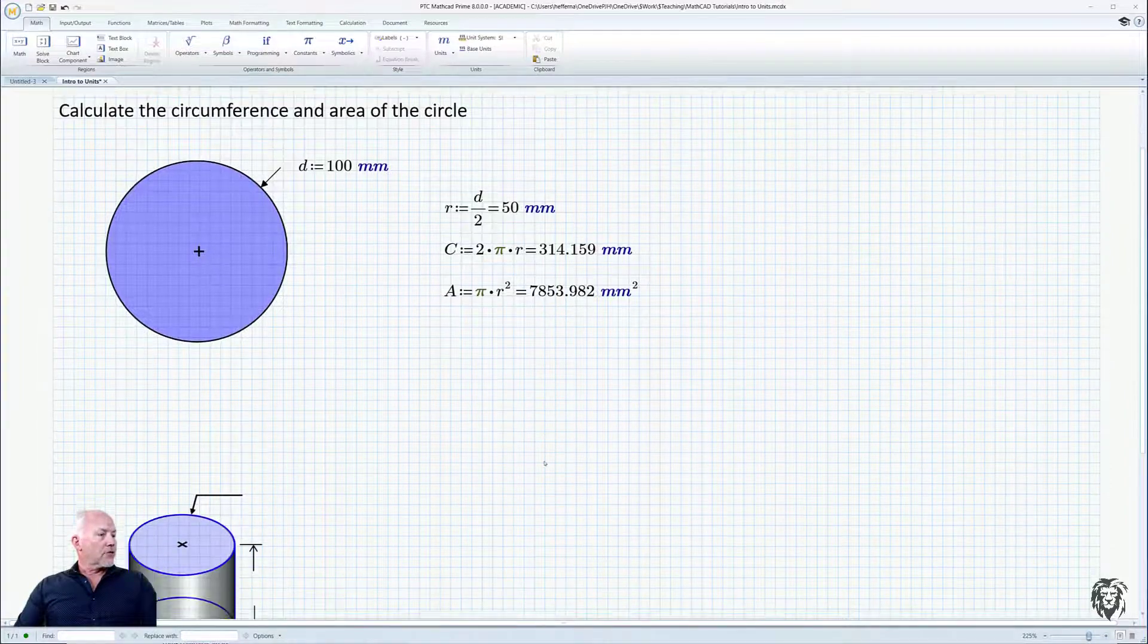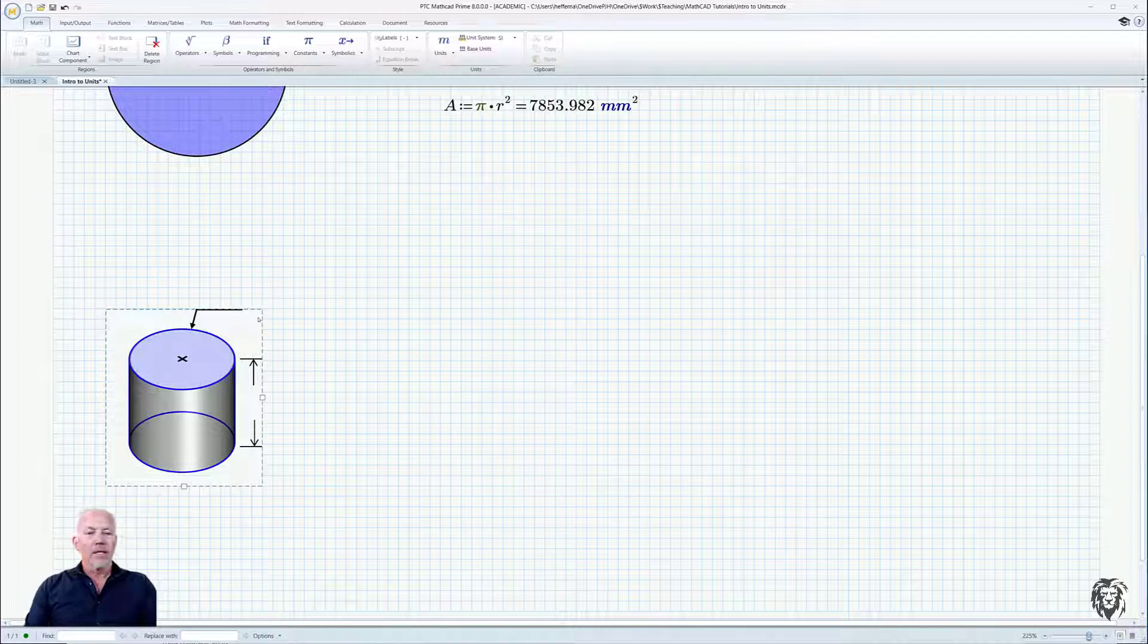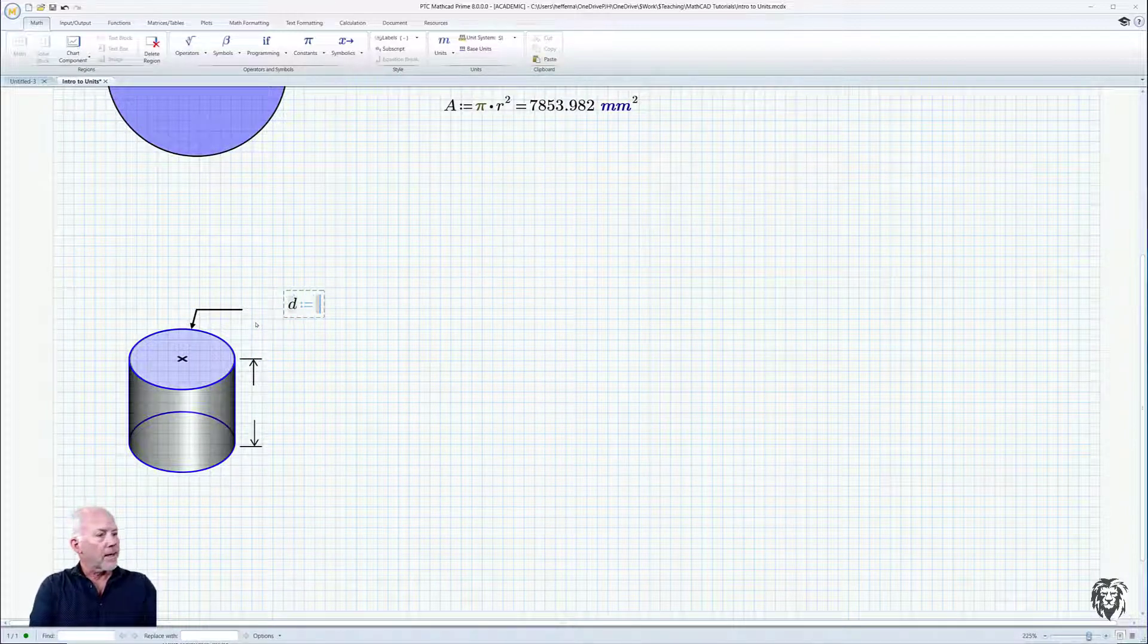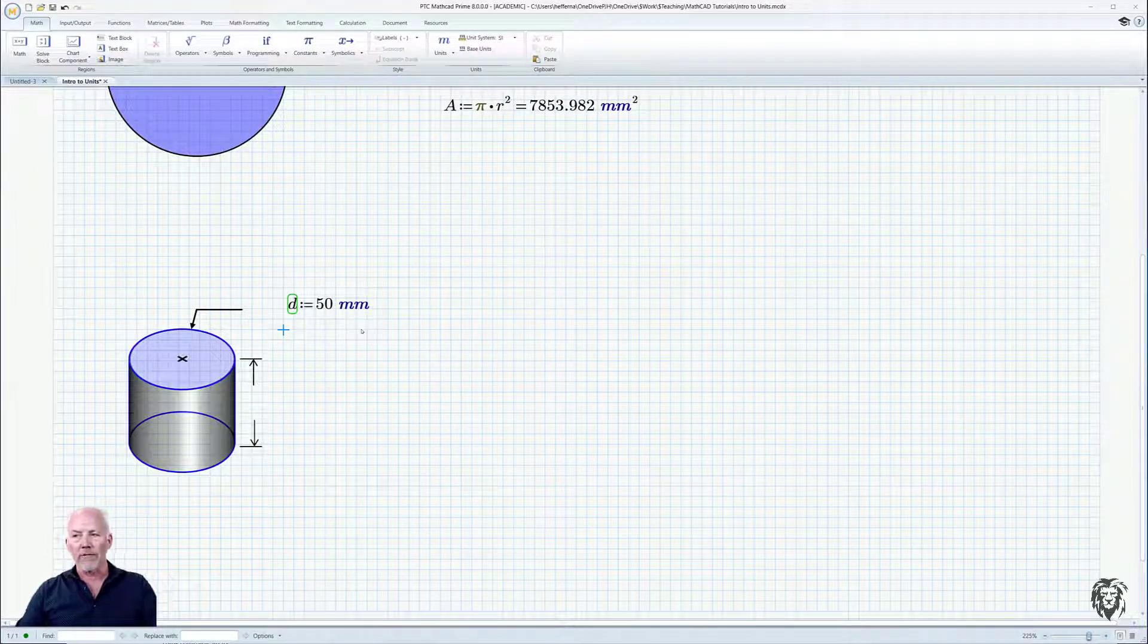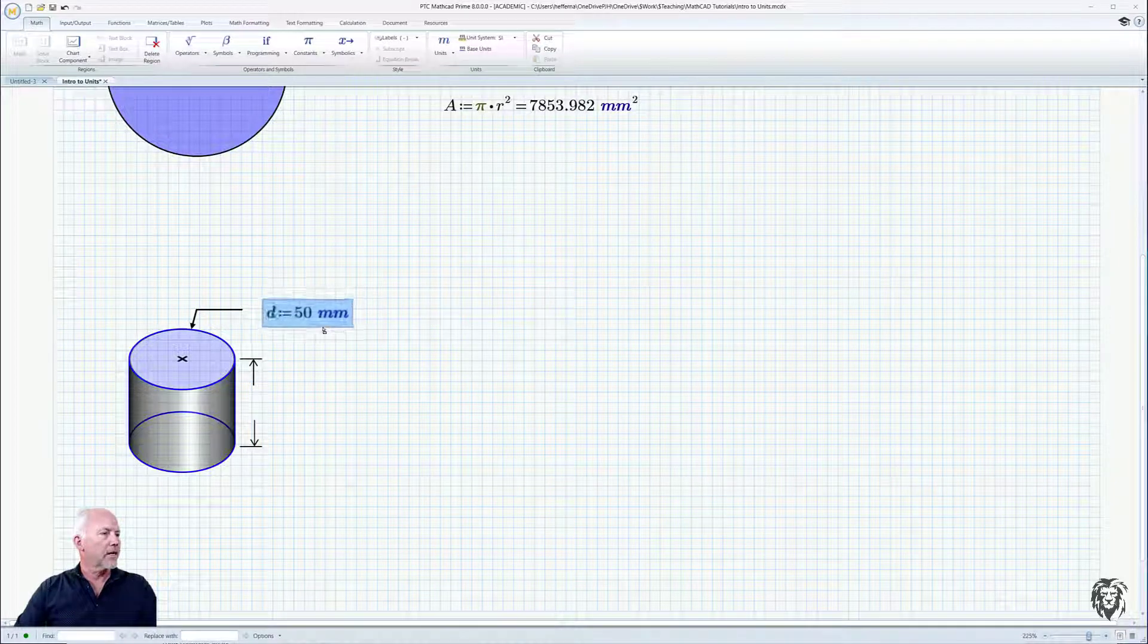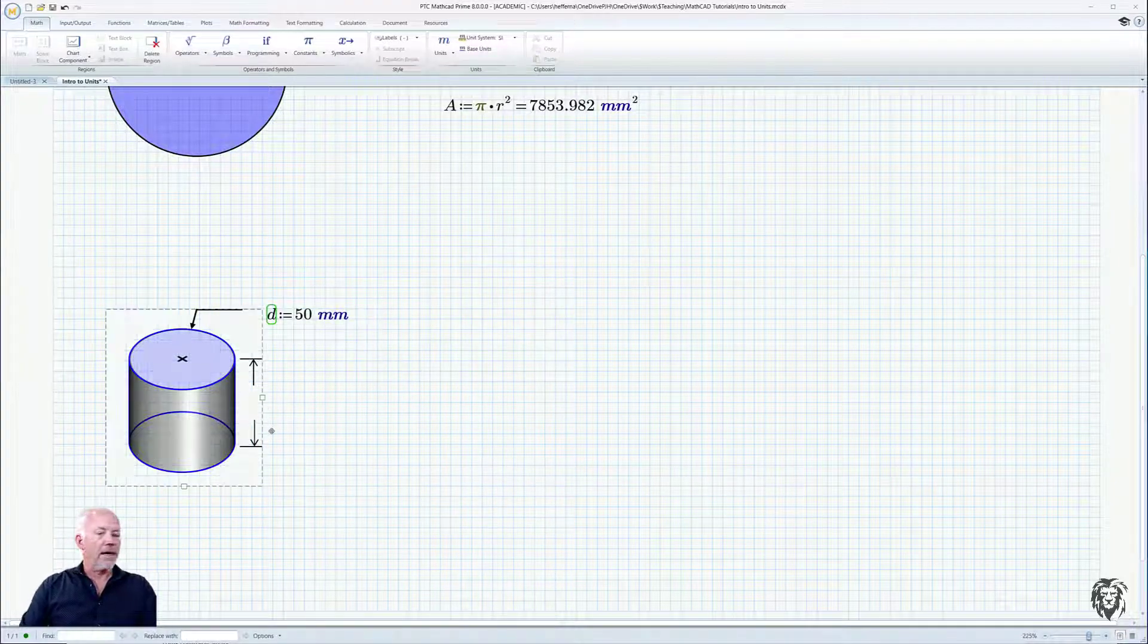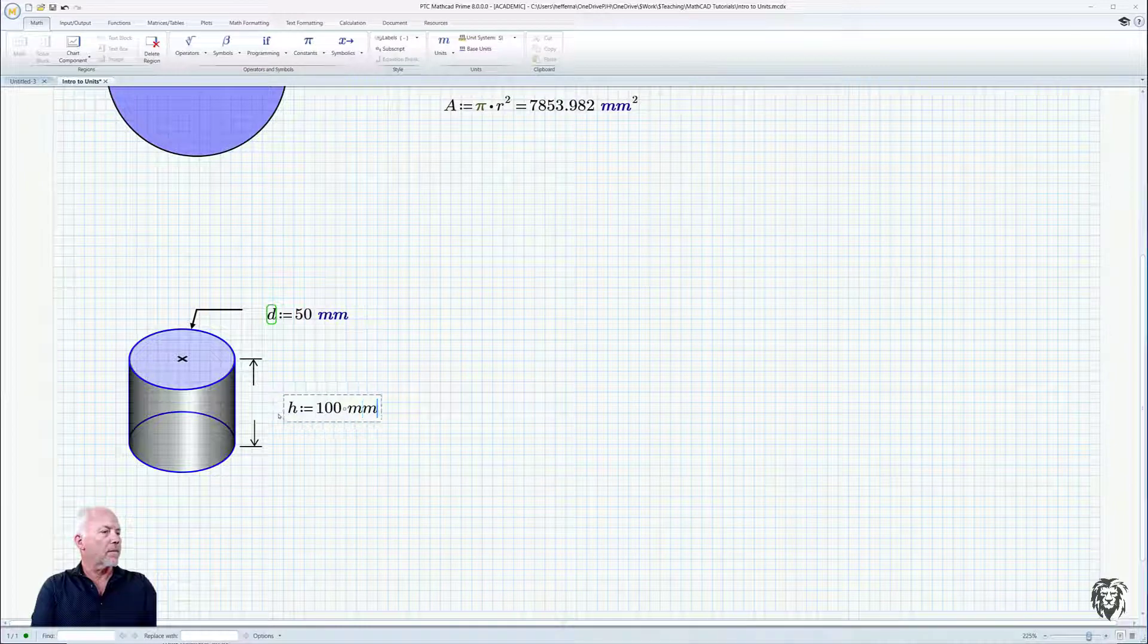We'll just scroll down. We still have our cylinder, and just a little bit more practice here. So outside diameter, and we said it was 50 millimeters. Remember, we get the green box now because we've redefined it, so it just lets us know in case we're doing something we're not expecting. And now h will also be in millimeters, so h is equal to 100 millimeters.